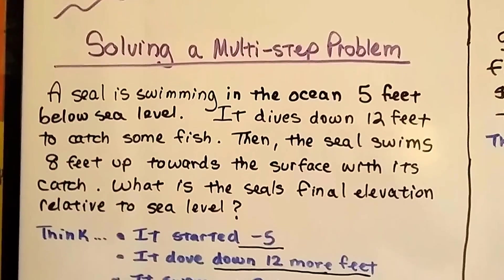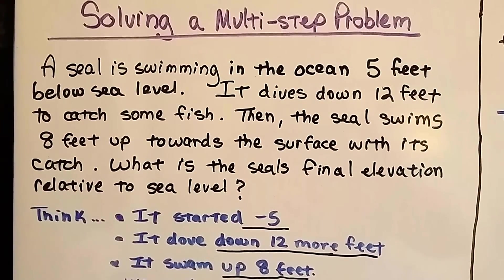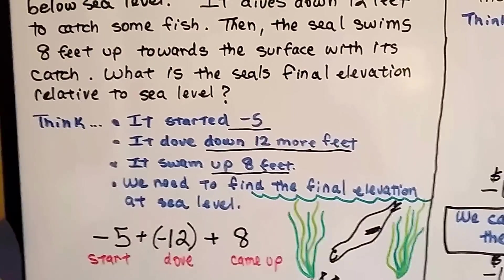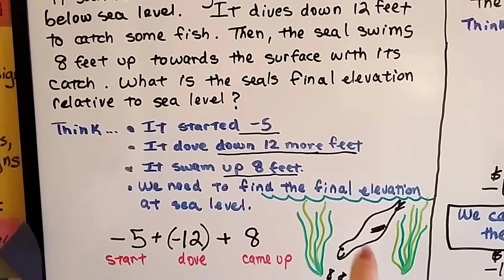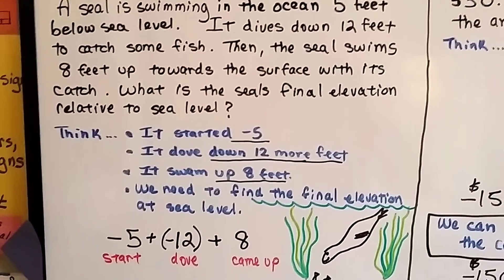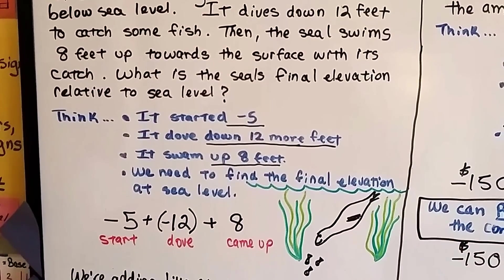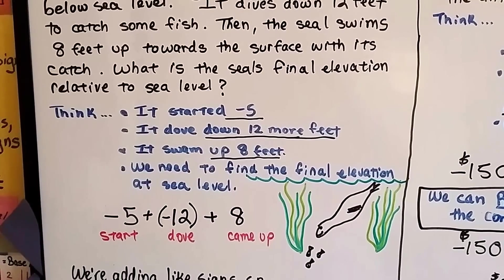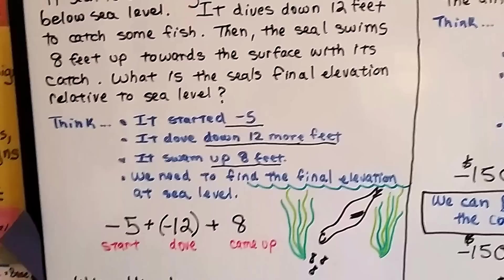Here's solving a multi-step problem. A seal is swimming in the ocean 5 feet below sea level. Here he is right here. See our little seal? And he dives down 12 feet to catch some fish, then the seal swims 8 feet up towards the surface with its catch. What's the seal's final elevation relative to sea level?